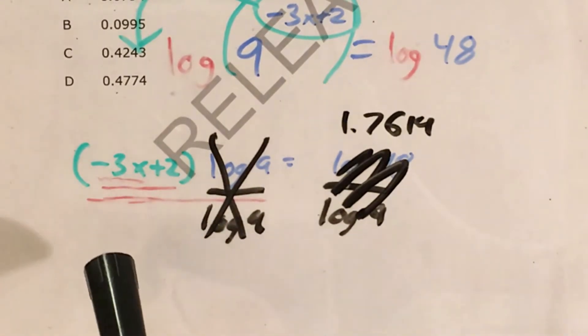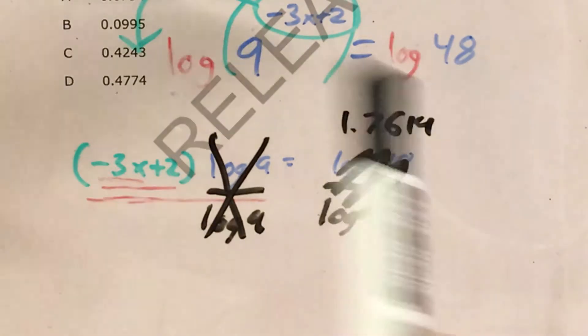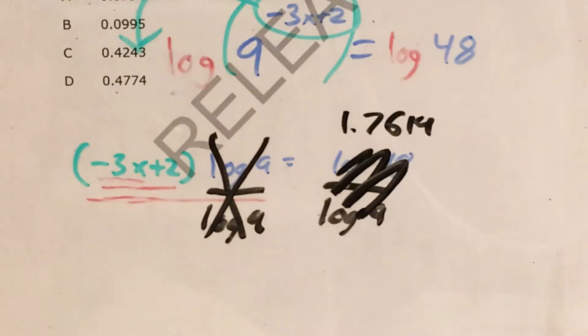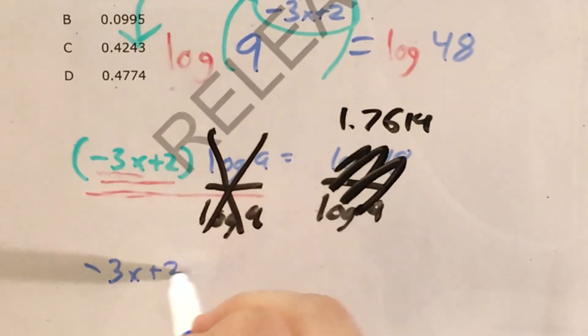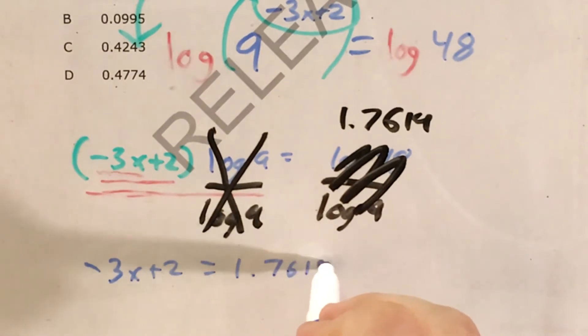And now after all this clutter is gone, I'll see that I just have a two-step equation. Negative 3x plus 2 equals this. So let's go ahead and, actually I'll rewrite this before starting the steps. Negative 3x plus 2 equals 1.7619. So now I want to get rid of my plus 2 by subtracting 2.